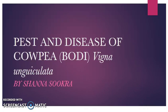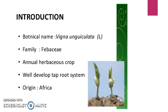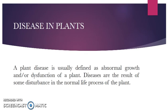Hi, today we are going to look at pests and diseases of cowpea. My name is Shanna Sucra. In this presentation we are going to look at the different stages of pest and disease symptoms of cowpea, which is also known as 'body.' To give a brief introduction, its botanical name is Vigna unguiculata, it is an annual herbaceous crop with a well-developed taproot system, and its origin is from Africa.